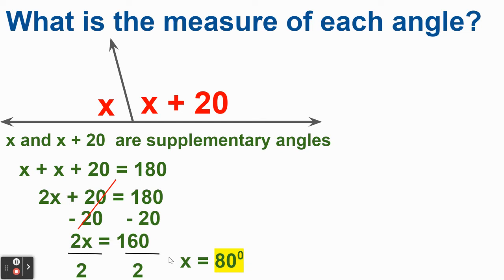Boom. What do we get? x plus 20. Well, that just means for x plus 20, I take 80 and add 20. 80 plus 20 is 100 degrees there.